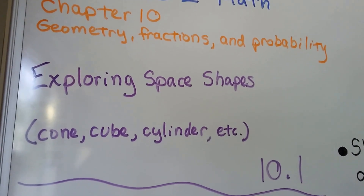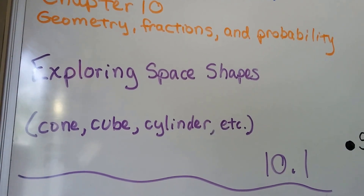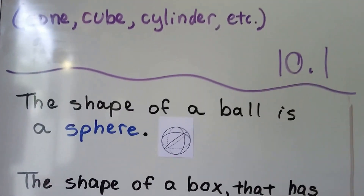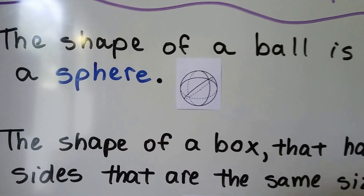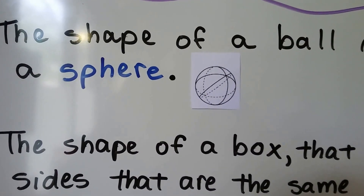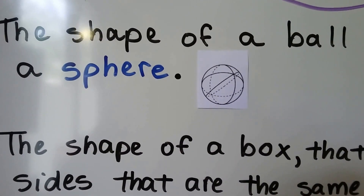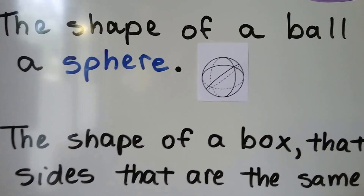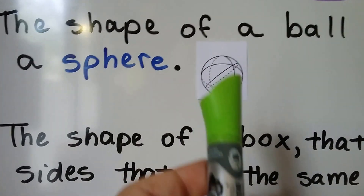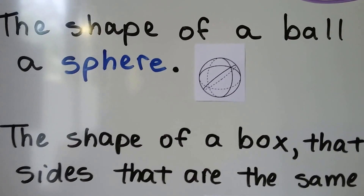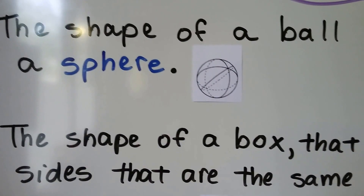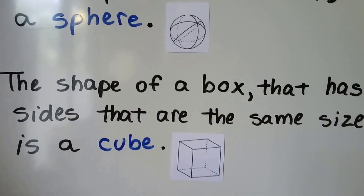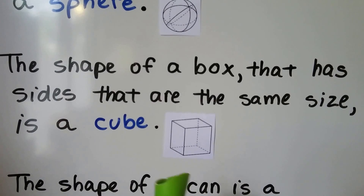The shape of a ball is a sphere. We can see through it to the other side to show us how it's circular — see that, it's a circle.